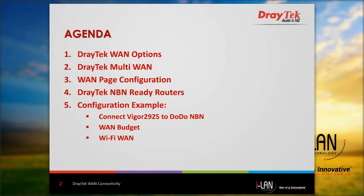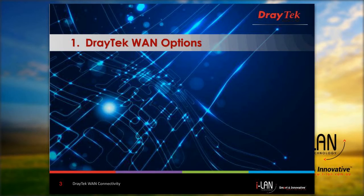Hello everyone, good morning. This is Rudy from Alien Technology. In the webinar today we will cover topics including DrayTek routers, WAN options, multi-WAN topics, WAN page configuration, series of routers tested on NBN network, and configuration examples for Dodo NBN with the Vigor 2925 WAN budget, and the new Wi-Fi WAN feature. Let's start with the overview on WAN options for DrayTek routers.